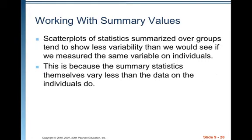Scatter plots and statistics summarized over groups tend to show less variability than we would see if we measured the same variable on individuals. That's true for data in general, is that when you are looking at averages, when you're looking at summaries, they're more stable. That's why we report student averages for a whole entire semester. That's what goes on your transcript versus just randomly picking out a single test grade. There's great variability among individual observations, much less so when things are averaged over time. This is because the summary statistics themselves vary less than the data on the individuals do.